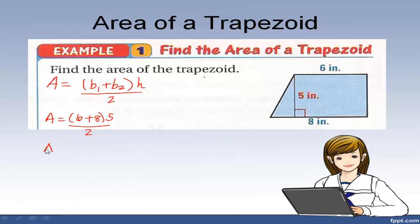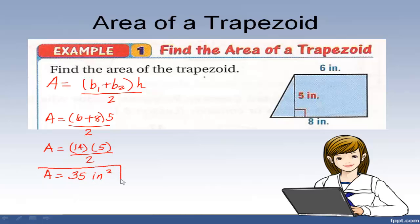Remember the order of operations — we always do what's in the parentheses first. So let's add 6 and 8, that makes 14. So it's 14 times 5 divided by 2. You can divide 14 by 2 to get 7, and then 7 times 5 gives you 35. That's 35 square inches — the area of this trapezoid.